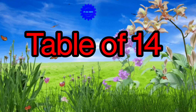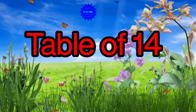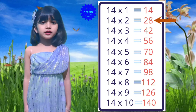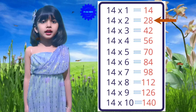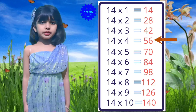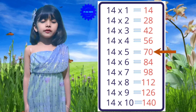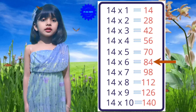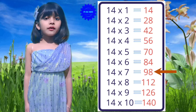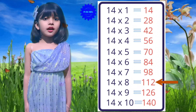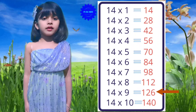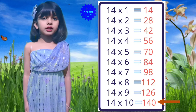Now let's learn the table of 14: 14 ones are 14, 14 twos are 28, 14 threes are 42, 14 fours are 56, 14 fives are 70, 14 sixes are 84, 14 sevens are 98, 14 eights are 112, 14 nines are 126, 14 tens are 140.